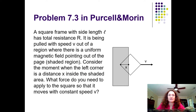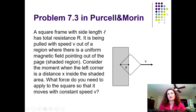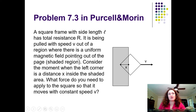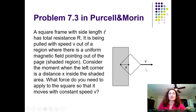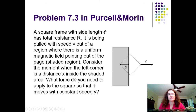Let's do an example problem — problem three in chapter seven in Purcell and Warren's textbook. A square frame with side length L has total resistance R. The square frame is oriented on its point, so it looks like a diamond. It's being pulled with speed V out of a uniform region where there's a uniform magnetic field pointing out of the page, shown as the shaded rectangle. We're considering the moment when the left corner is a distance X inside the shaded area. What force do you need to apply to the square so that it moves with constant speed V?